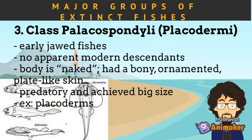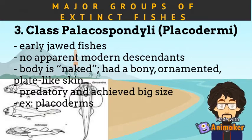Class Polacospondyli or Placodermy are early jawed fishes that arose in the Silurian but disappeared in early Carboniferous. They left no apparent modern descendants. Their body is naked with bony, ornamented and plate-like skin. They are considered as predators and achieved monstrous size. Examples are the Placoderms.